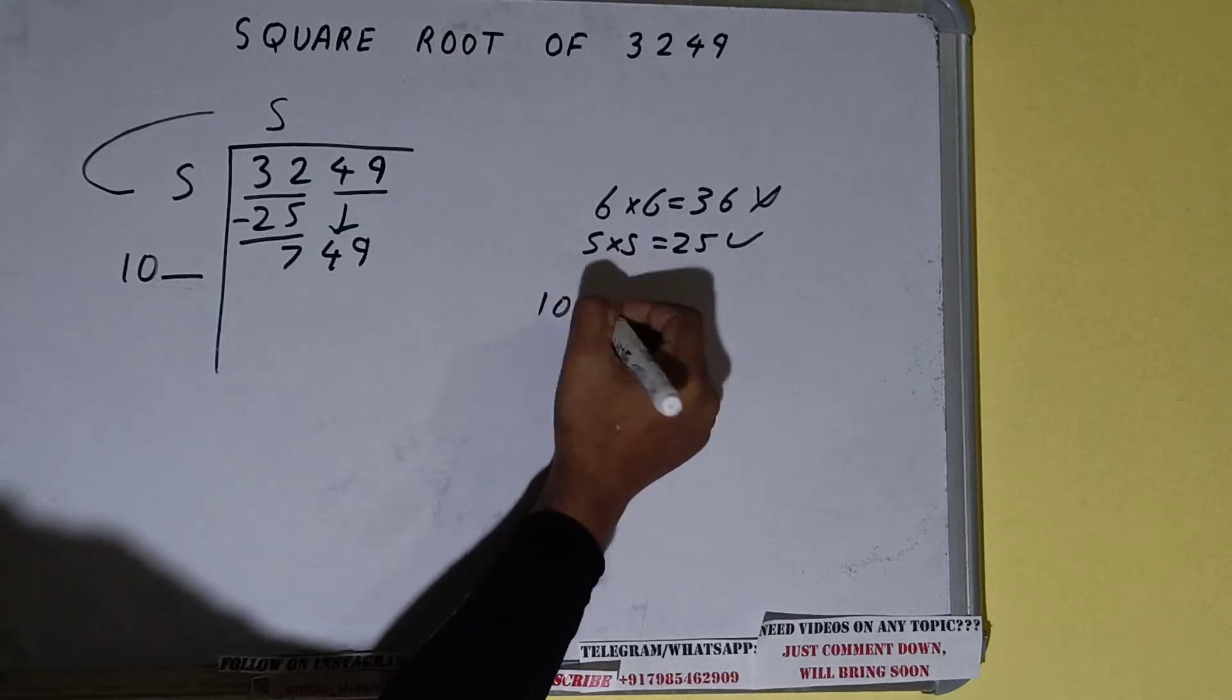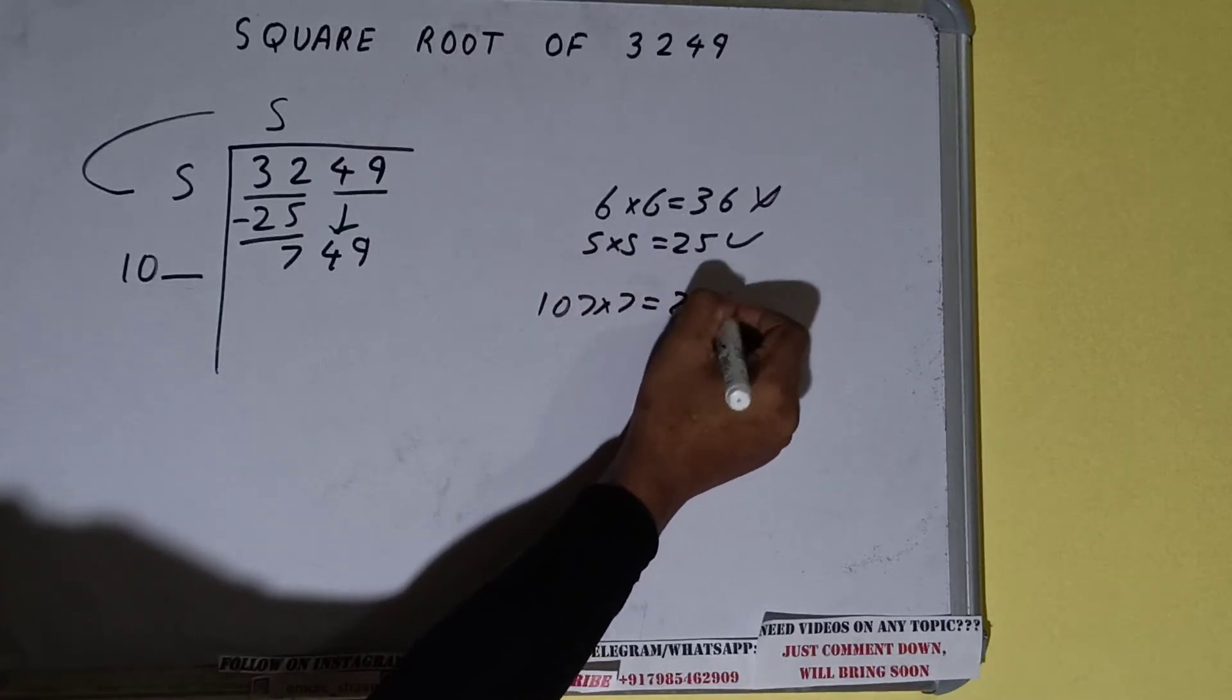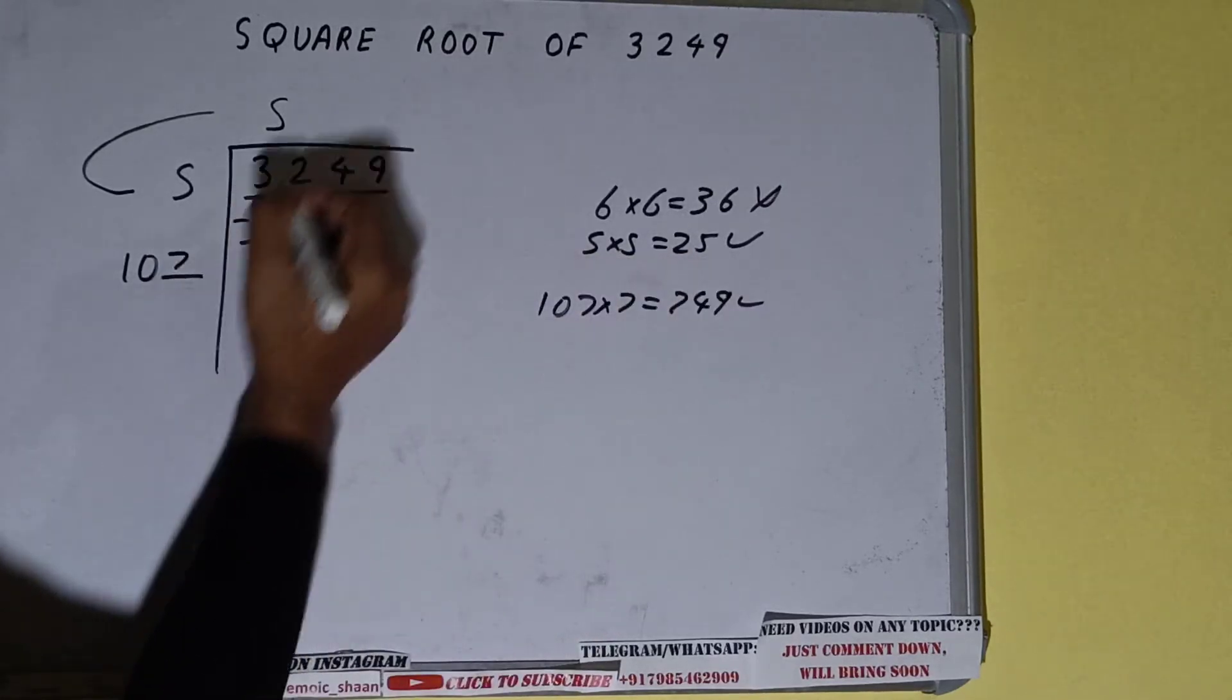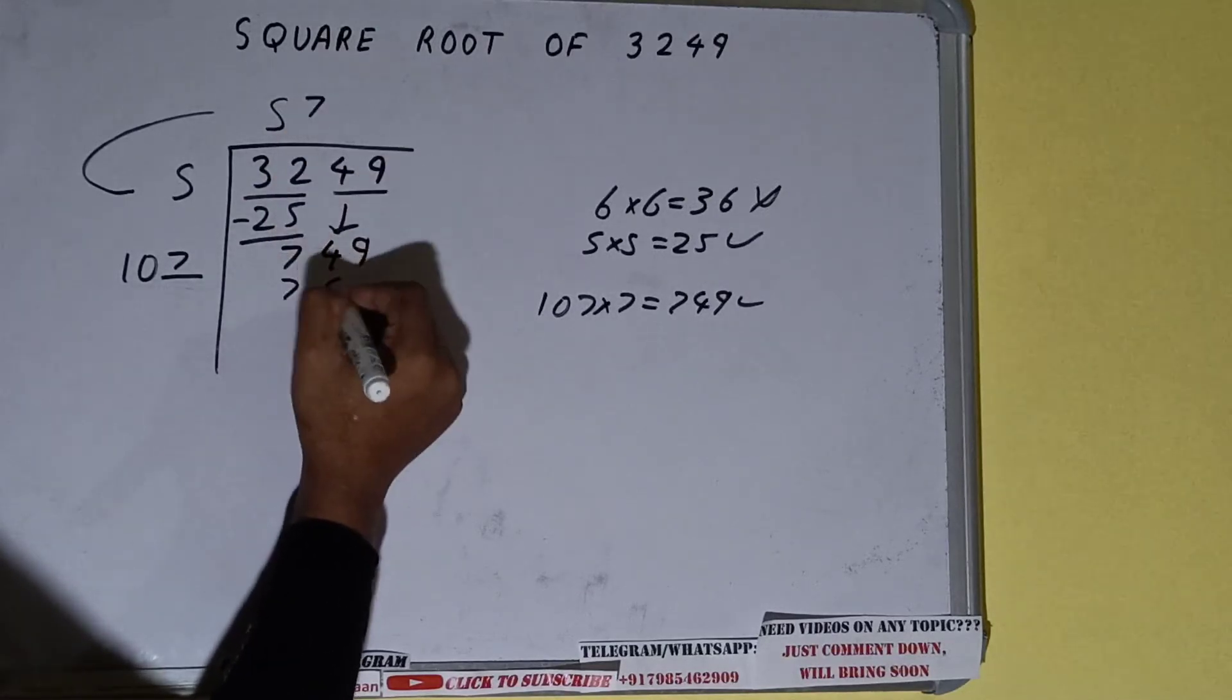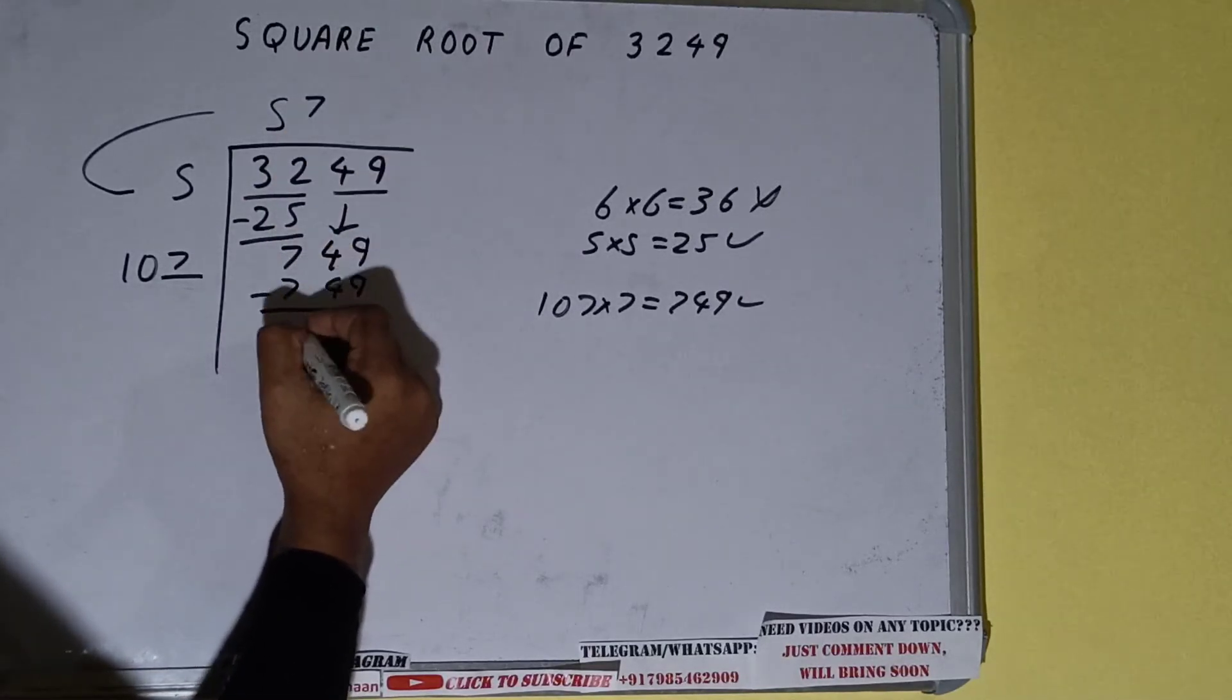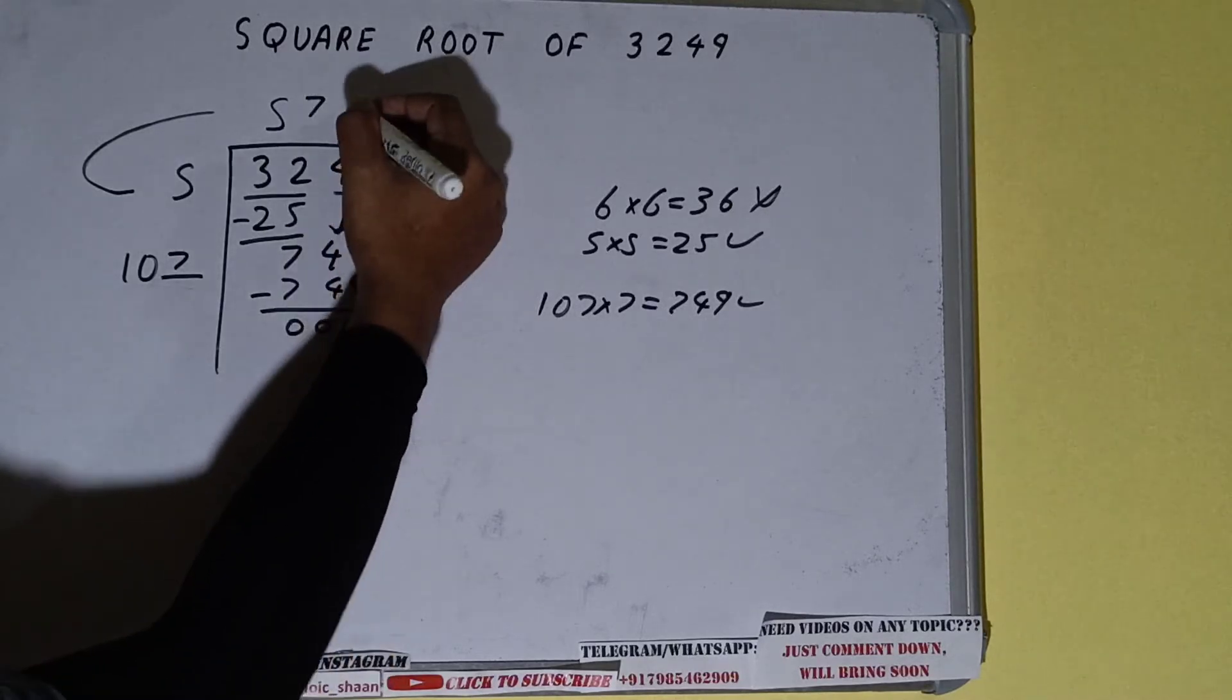So 107 into 7 will be 749, which is good to use. So 7 here and 7 here, 749 subtract it, and we'll get 0. Once we get 0, the answer will be in the question, that is 57.